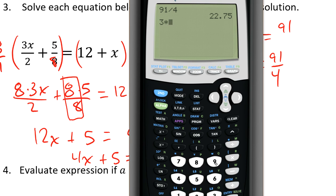If I take 3 times this 91 over 4, and then I divide that by 2, and then I add to that 5 divided by 8, I get this number, 34.75.